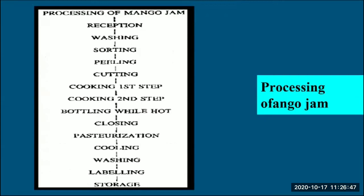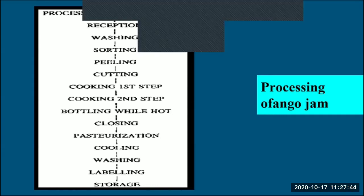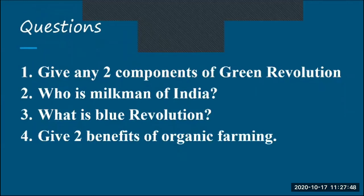Processing of mango jam involves: reception, washing, sorting, peeling, cutting, cooking the pulp, bottling while hot, closing, pasteurization, cooling, washing, labeling, and then storage, transportation and distribution. Pasteurization is a process in which packaged and non-packaged food such as milk or fruit juices are treated with mild heat — usually less than 100°C — to eliminate pathogens and extend shelf life, which is why jams can be kept for a specified period.